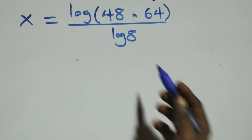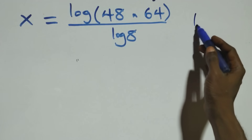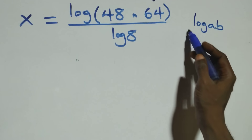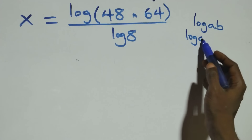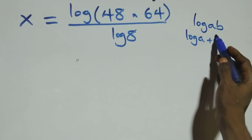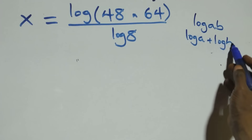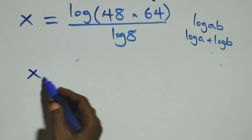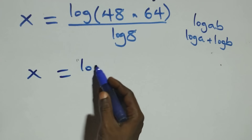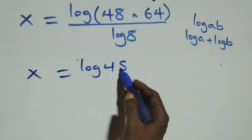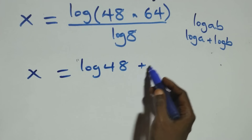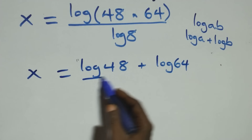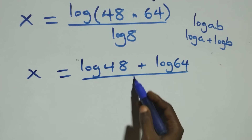Then, the next step here, this follows the logarithm product rule. When we have log of a times b, this is the same thing as log a plus log b. That is, what we have here becomes x equals log 48 plus log 64 over log 8.